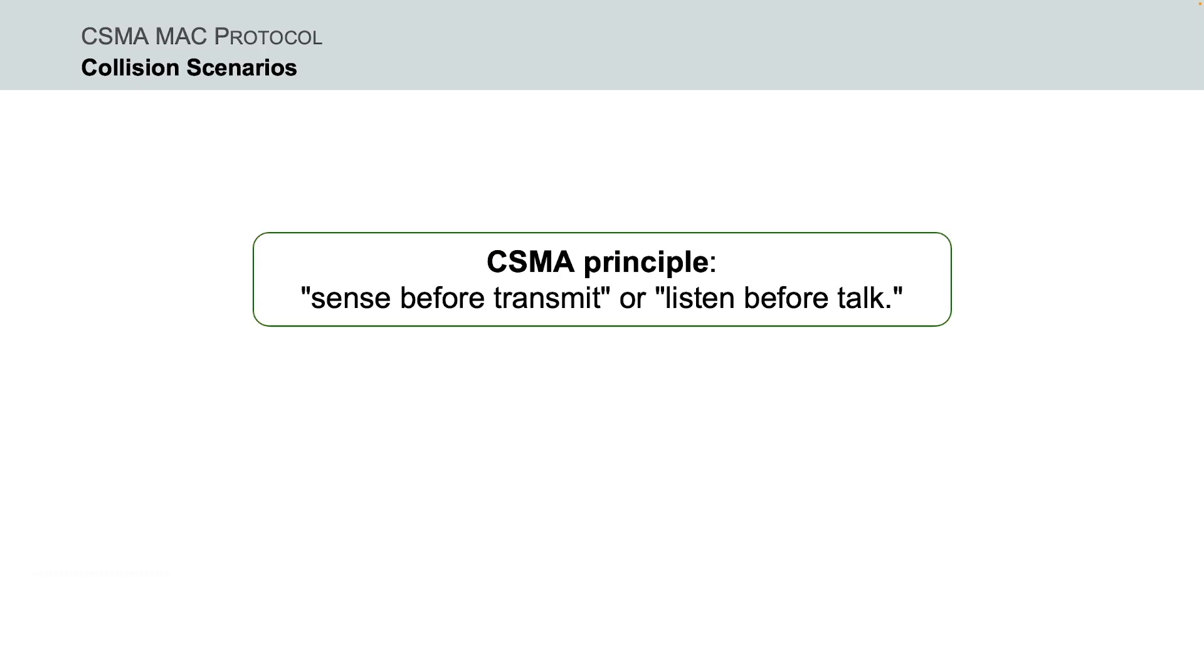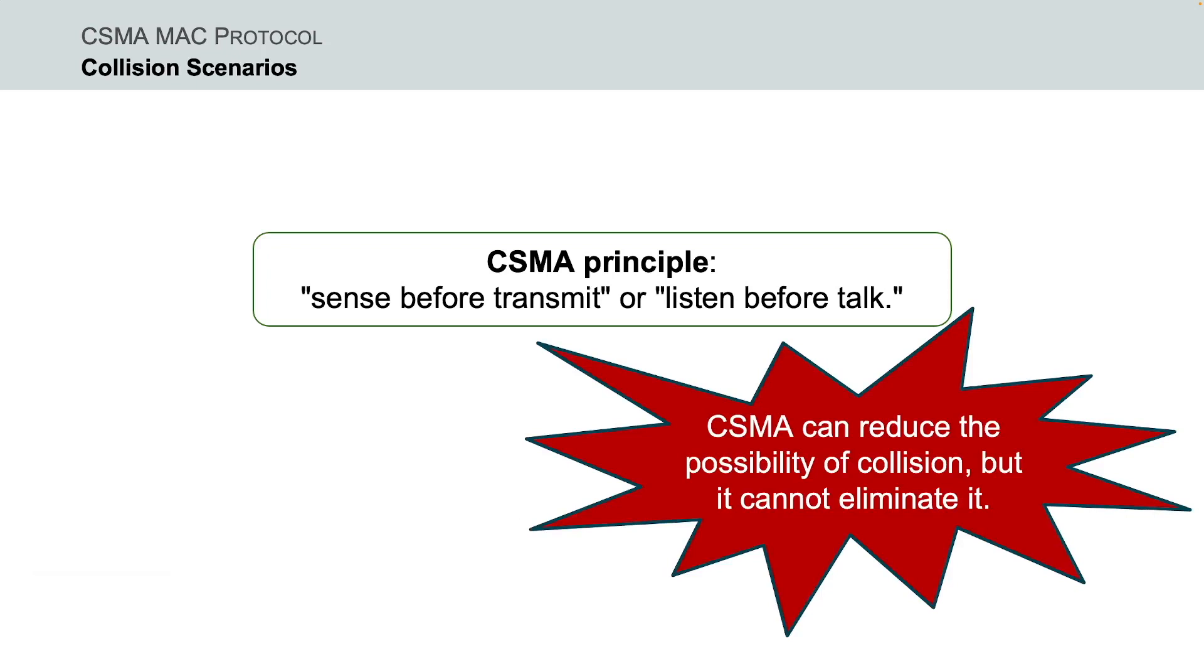In our previous video we saw that CSMA can reduce the possibility of collision by sensing the shared medium to detect the presence of carrier signal before transmitting a frame. However, CSMA cannot eliminate the collisions.